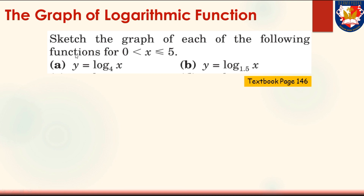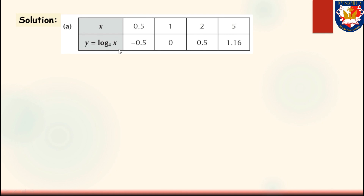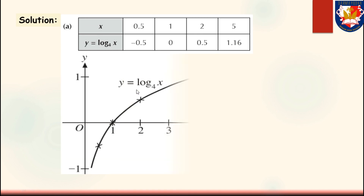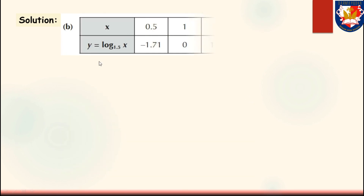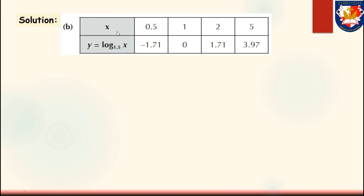Solution for Try 7: logarithm of 36 to the base of 8 over logarithm of 1 over 216 to the base of 8 equals logarithm of 6 squared to the base of 8 over logarithm of 6 to the power of negative 3 to the base of 8. Using the power law, this gives 2 times logarithm of 6 to the base of 8 over negative 3 times logarithm of 6 to the base of 8. Cancelling gives negative 2 over 3. For the logarithm graph sketching: sketch each function for 0 less than x less than or equal to 5. Part A: y equals logarithm of x to the base of 4 — choose x values, substitute, plot, and connect the points on the Cartesian diagram. Part B: y equals logarithm of x to the base of 1.5 — similarly, obtain points, plot, and connect them smoothly.